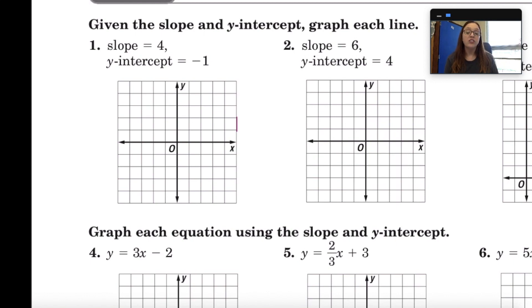So if my y-intercept is negative one, I need to find negative one on the y-axis. So that would be right here. I'm going to find that point. This is the y-intercept.